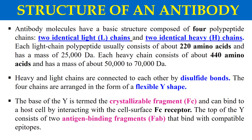Now let's discuss about the structure of an antibody. Antibodies consist of four polypeptides, in which two are identical light chains and the other two are identical heavy chains. The light chains consist of 220 amino acids while the heavy chains consist of 440 amino acids. These light and heavy chains are interlinked with each other with the help of disulfide bonds. The base of the antibody is known as the Fc portion or crystallizable fragment, while the upper portion is known as the variable region where the antigen binds, also known as Fab — antigen binding fragment.